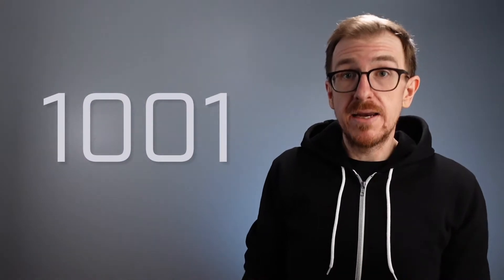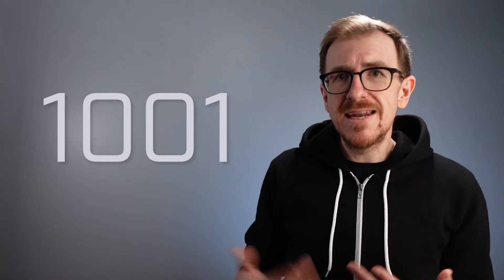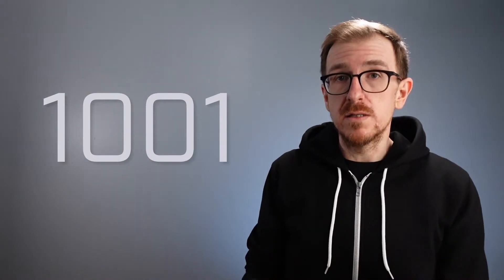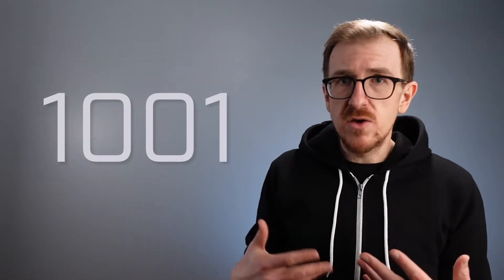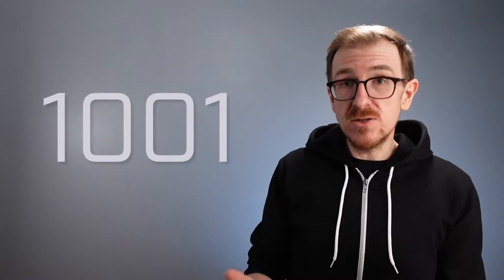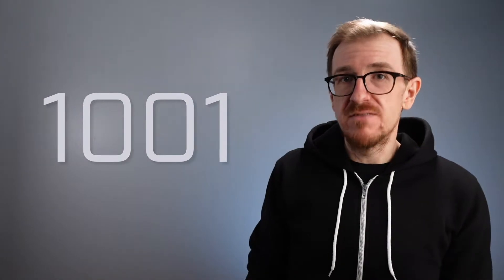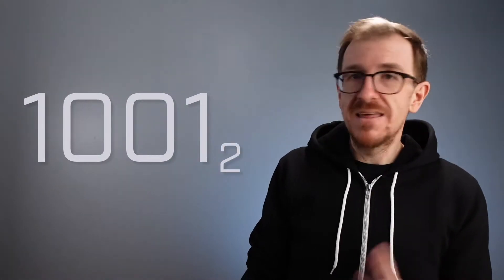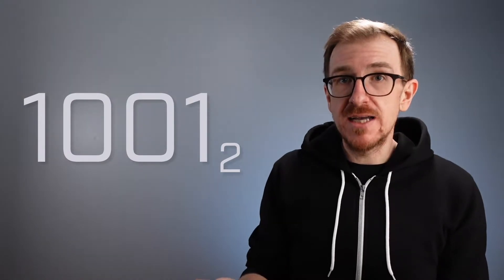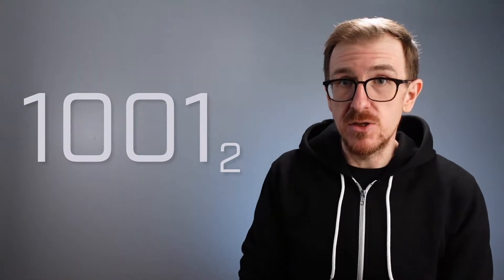Alright, so here's an example of a binary number. Notice that it looks a lot like a decimal number, but it only uses zeros and ones. To make sure that we know that this is the binary number 1001 and not the decimal number 1001, let's add a bit of notation. That little 2 tells us that the number is being expressed in binary or base 2.